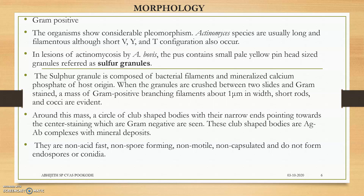The pus will contain small yellow pinhead-shaped sulphur granules, which are very important in the case of small lesions. Sulphur granules are composed of bacterial filaments and mineralized calcium phosphate of the host's origin. Around this mass, a circle of club-shaped bodies with their narrow ends pointing towards the center will have gram-negatives — they are actually the antibody-antigen complex.